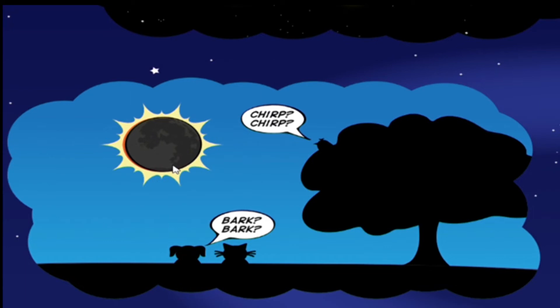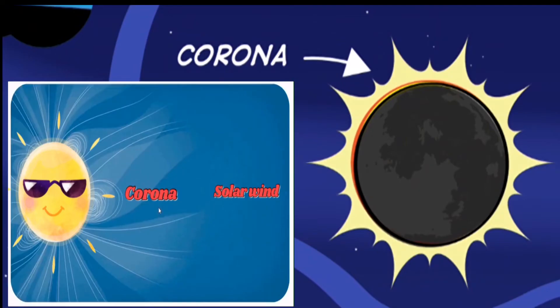But this total darkness can be kind of cool for scientists who study the Sun's atmosphere called the corona. The corona is very dim - it's usually hard to see because the Sun is so much brighter. But when the moon blocks the Sun's light during an eclipse, all you can see is the light from the corona.